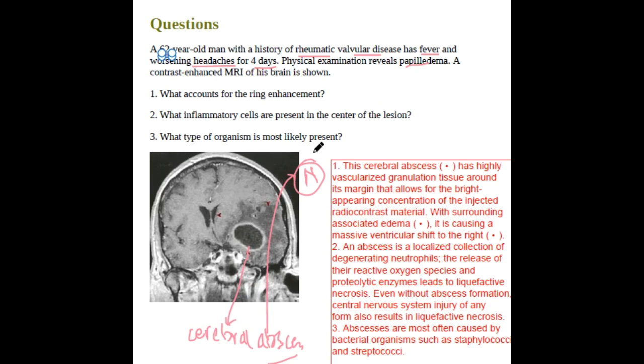What type of organisms are mostly present? Brain abscess is caused by staphylococcal and streptococcal organisms. Thank you for watching.